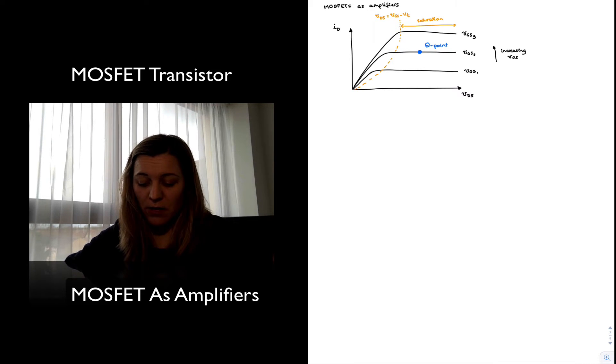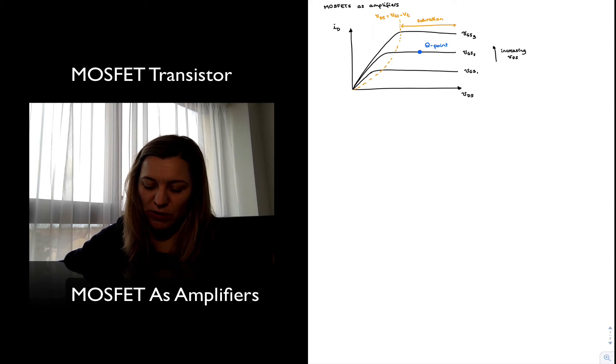And then, once I have set my quiescent point, my DC operating point, by connecting external circuitry to my transistor, now I'm in a position where I can start performing signal amplification. And it's going to be small signal amplification, because what we're going to do is apply small changes in the signal over that DC offset that we have set with our bias point, the small variations.